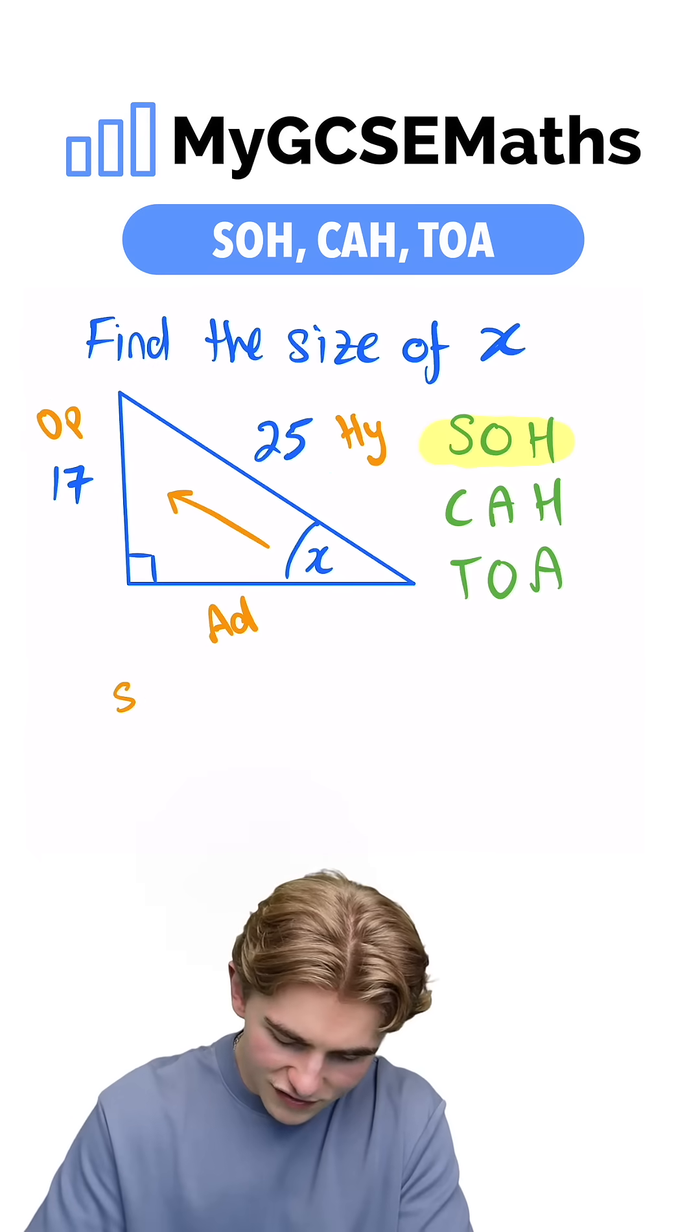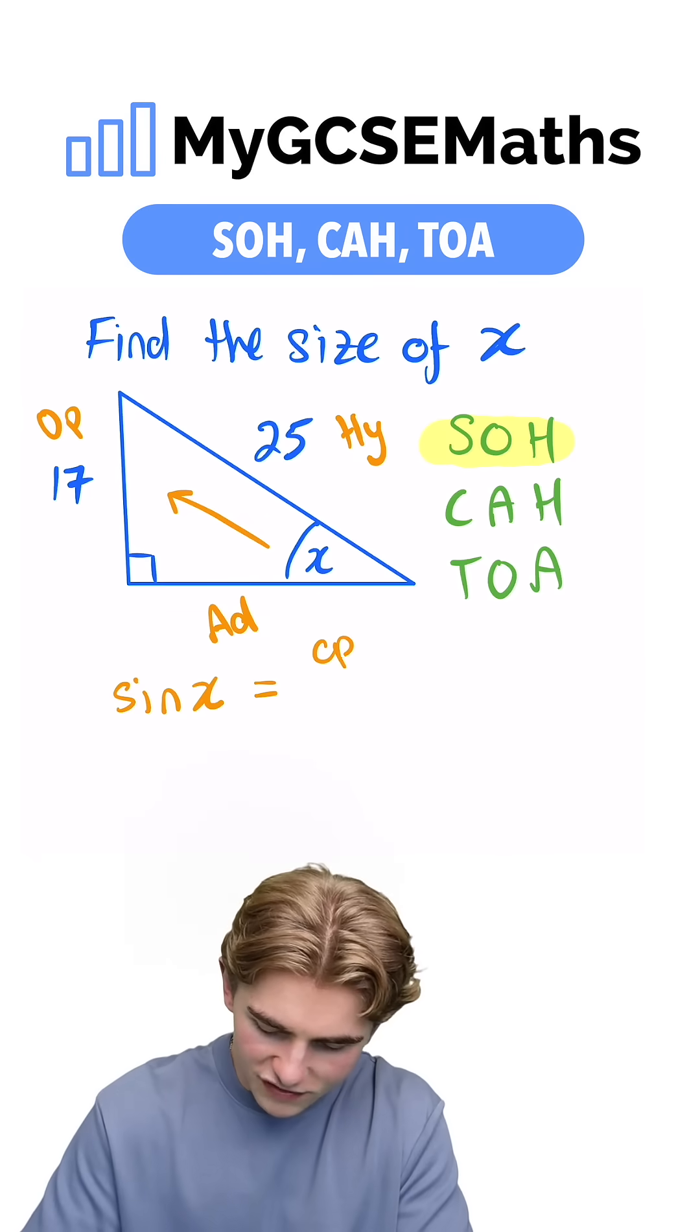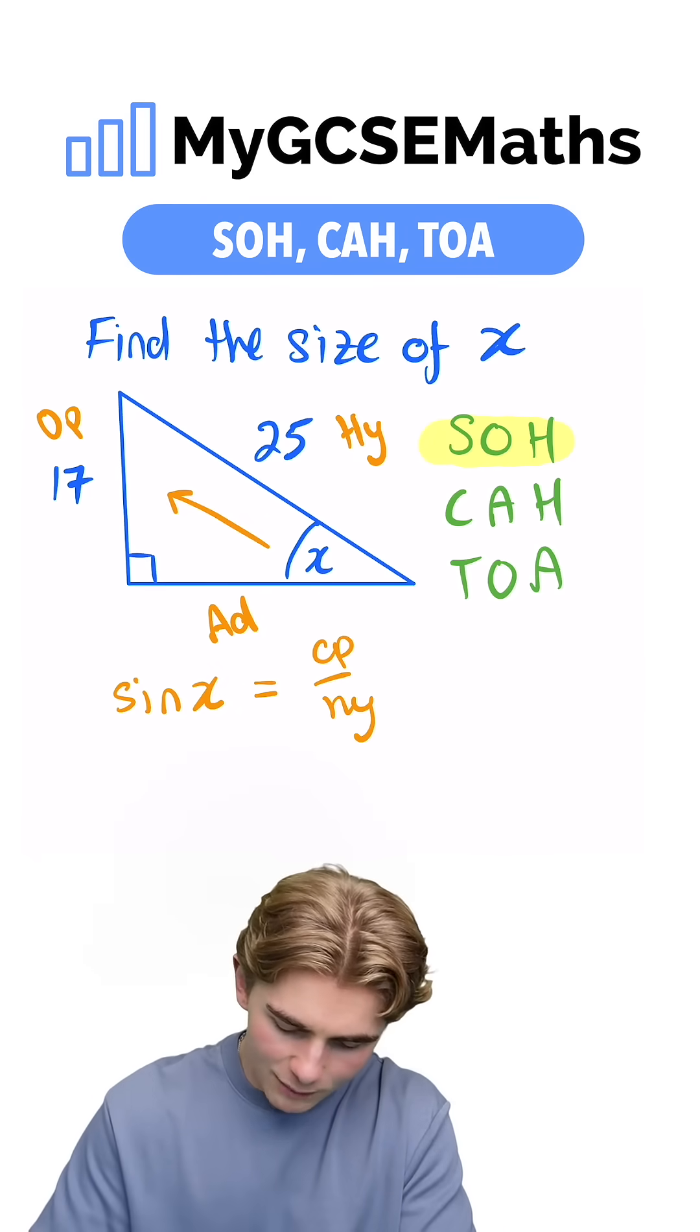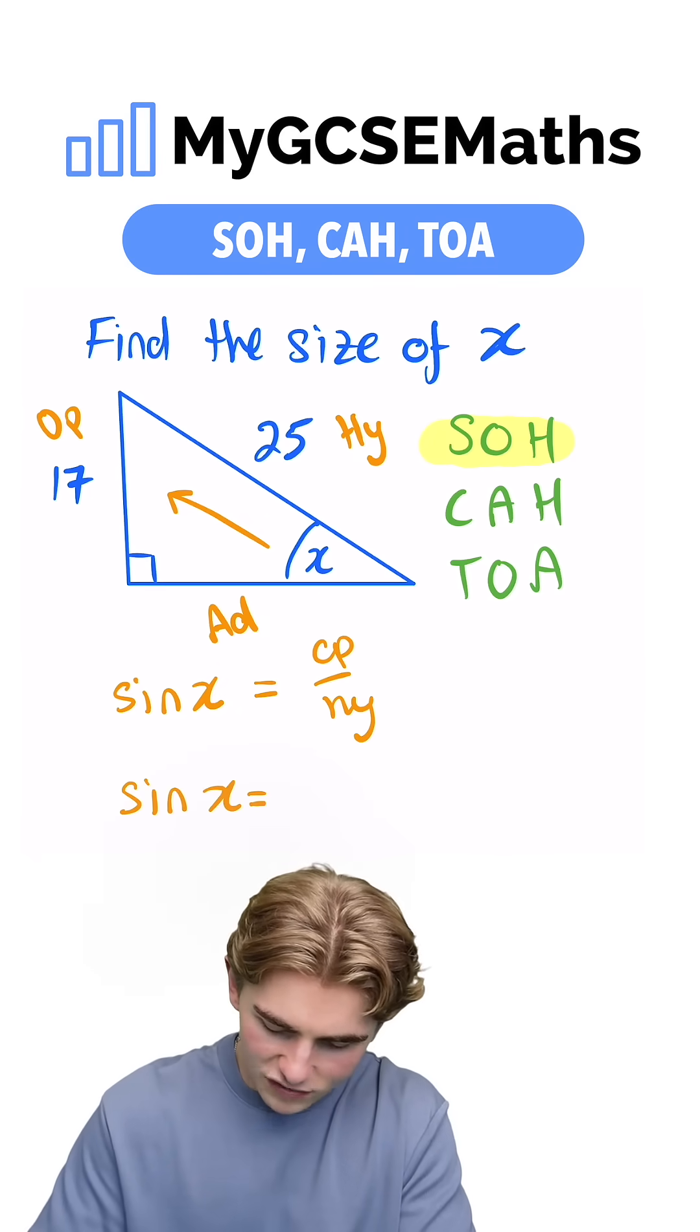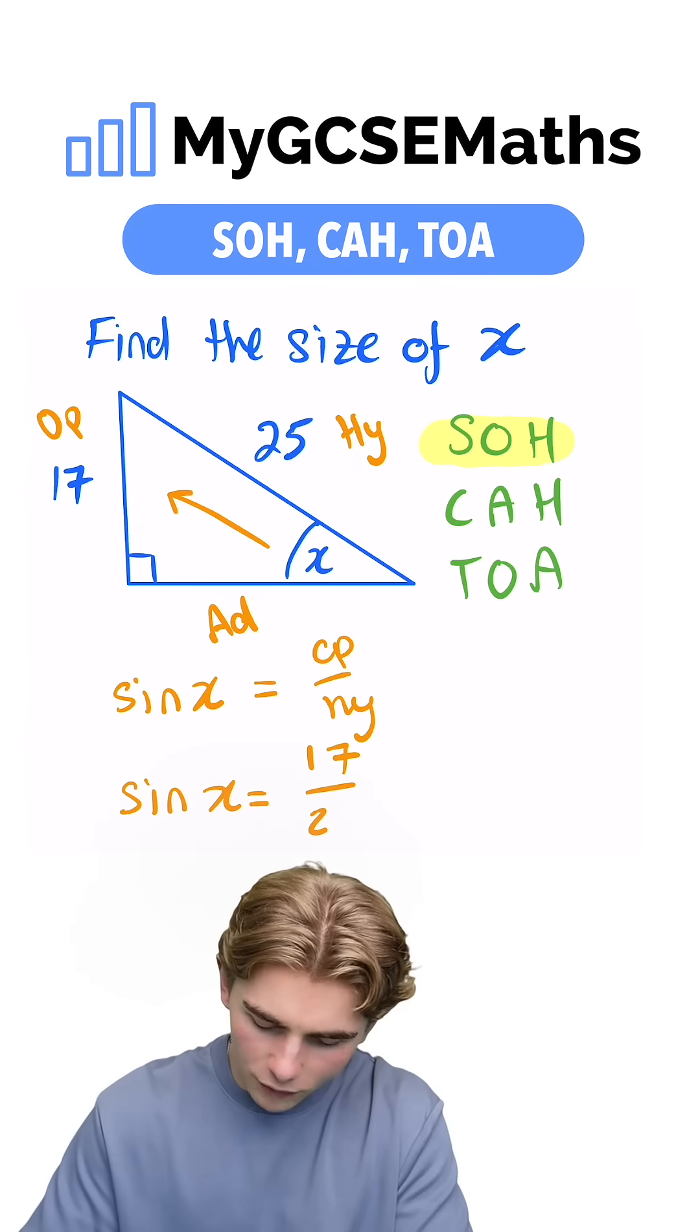SOH tells us that sine of our angle equals the opposite side over the hypotenuse. We can fill in the gaps. We have sine x equals our opposite side 17 over the hypotenuse 25.